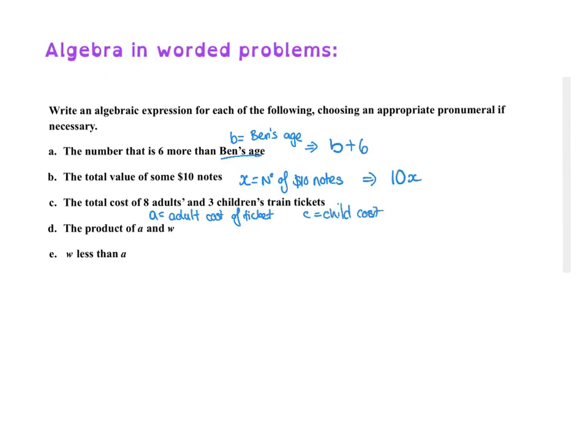So if we were trying to write an expression, well, we have 8A, whatever the adults cost, plus 3 of the children's, whatever the children's cost. So that's the expression.